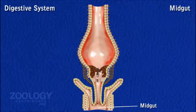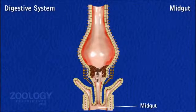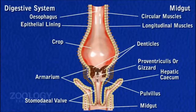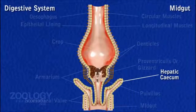Midgut: The midgut is the short and narrow tube-like middle part of the alimentary canal, also known as mesenterone. It is internally lined by glandular epithelium and acts like a true stomach, serving mainly for digestion and absorption. Opening into the anterior end of the midgut are seven or eight short, narrow, blindly ending hollow tubes called hepatic caeca, which are internally lined by epithelium and secrete digestive enzymes.